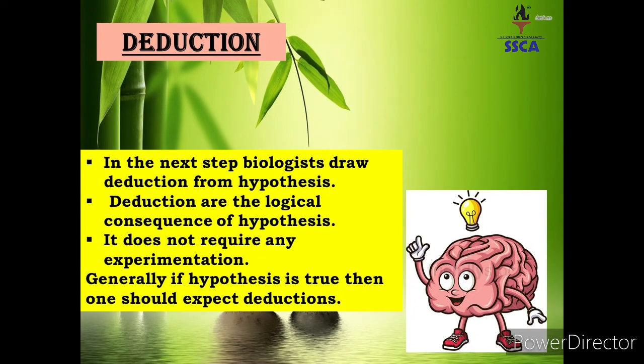After hypothesis, next step is deduction. In this stage biologists draw deductions from the hypothesis. Biologists ایک logical prediction دیتے ہیں اس particular problem کے بارے میں، but be remember: deduction did not include any kind of experimentation۔ اس کے اندر صرف biologists ایک logical thinking کو represent کرتے ہیں۔ A number of deductions can be made to explain the hypothesis, and deductions can be tested and verified by experiment۔ ایک hypothesis کے بارے میں کافی سارے deductions پیش کر سکتے ہیں اور deduction کو experimental work کے ذریعے ہی verify کر سکتے ہیں۔